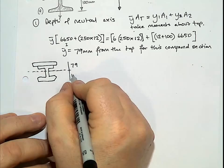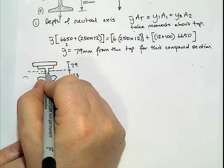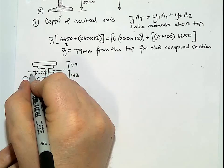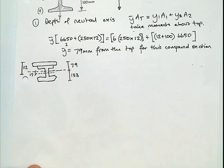So my neutral axis is 79. And from the bottom, it's 133. Just working with the dimensions, the distance from the compound neutral axis to the neutral axis of the I section.